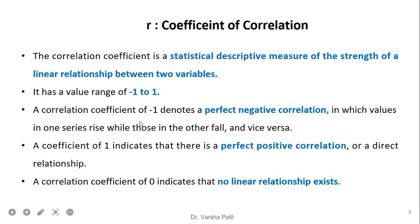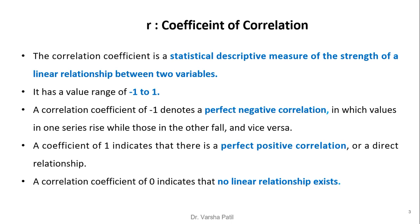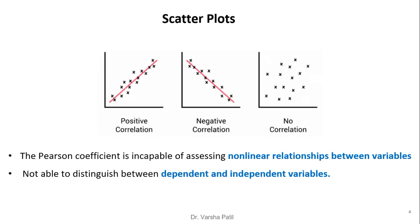A correlation coefficient of minus 1 denotes a perfect negative correlation, in which values in one series rise while those in the other fall, and vice versa. A coefficient of 1 indicates a perfect positive correlation, or direct relationship, meaning both series increase or both series decrease. A correlation coefficient of 0 indicates no linear relationship exists between the two series.